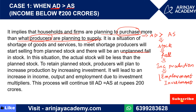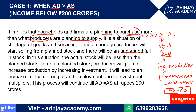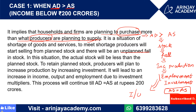Through this process, aggregate supply will meet aggregate demand in the economy — suppliers will provide as much as is demanded. Due to this mechanism, the economy's income rate, employment rate, and output rate will all increase.